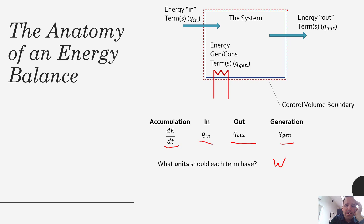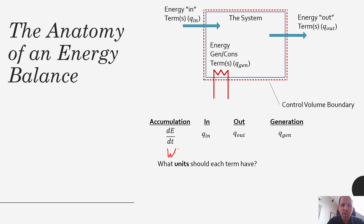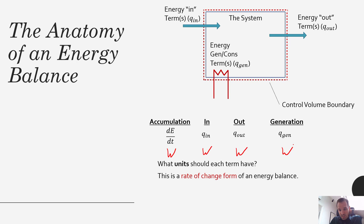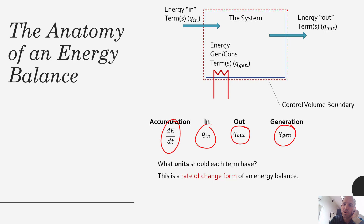Each of these is a rate — a rate of change of energy — so each term would have units of watts. Since we're adding and subtracting all of these terms together, they must all be in the same units; you can't mix apples and oranges. It's very important to make sure each term has the right units as part of your energy accounting system. This is the rate of change form of an energy balance: how fast is the system accumulating energy, how fast is energy coming in and out, and how fast is it being generated — all in watts.